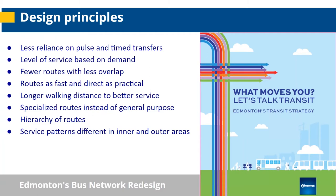We distilled this feedback down into basic principles for building the system going forward: moving away from pulse and timed transfers to a frequency-based system; basing service levels on demand; making fewer routes with less overlap to simplify the network; moving routes off circuitous local streets onto more direct, linear roads; establishing a hierarchy of specialized routes instead of many overlapping general-purpose routes; and applying different service patterns in different areas to reflect different needs.